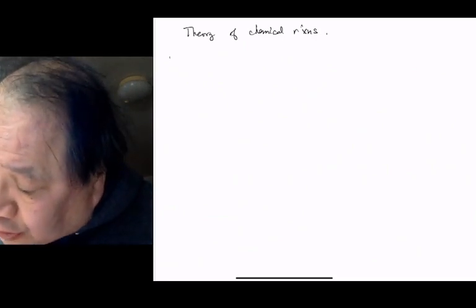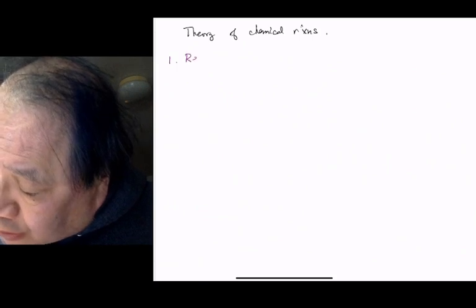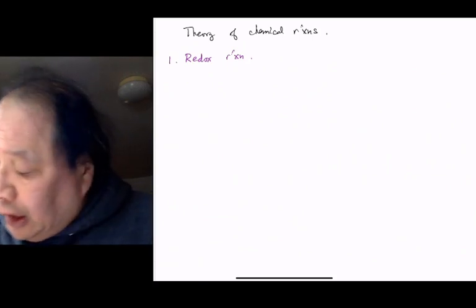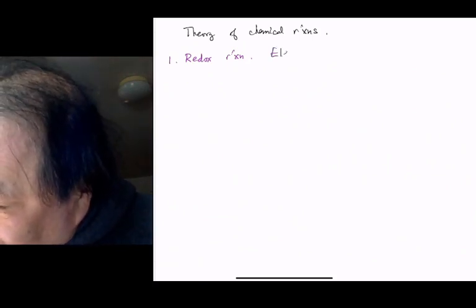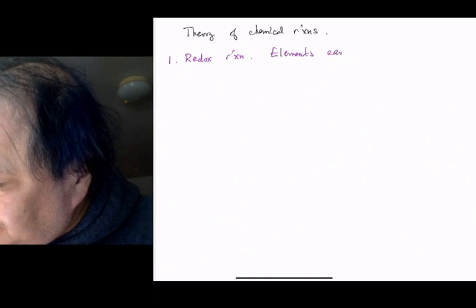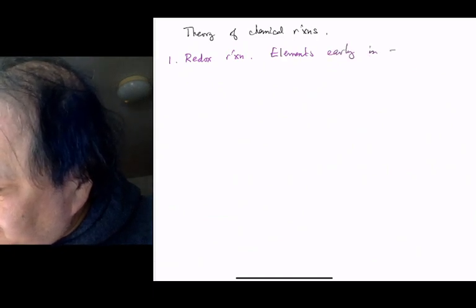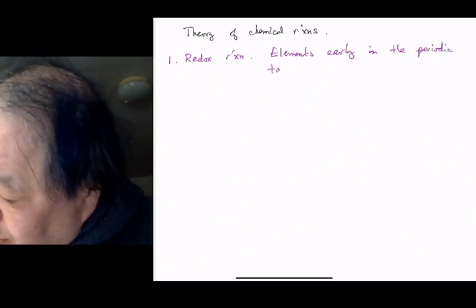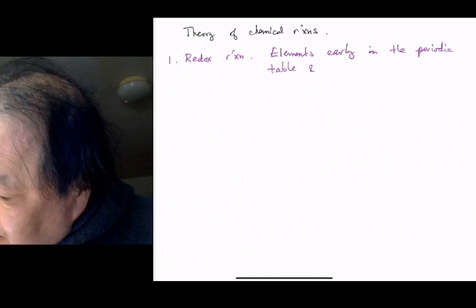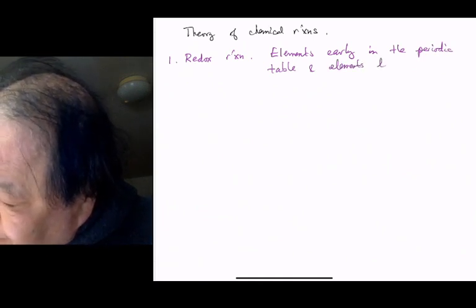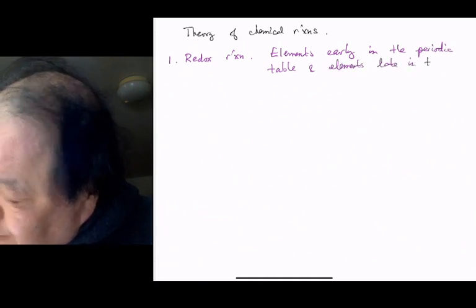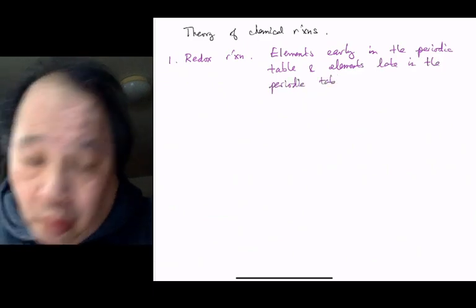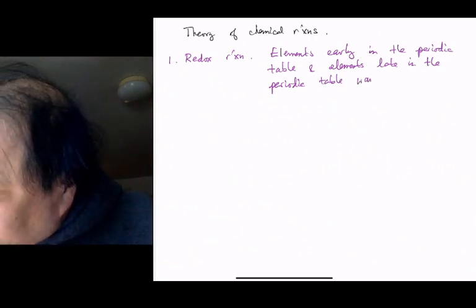The most important class of chemical reactions are redox reactions. And elements early in the periodic table and elements late in the periodic table want to achieve noble gas configurations.